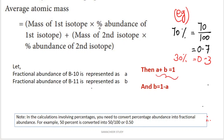Let B10 fractional abundance equal A and B11 fractional abundance equal B. Since A plus B equals 1, we can write B equal to 1 minus A. We will substitute this to simplify the equation.